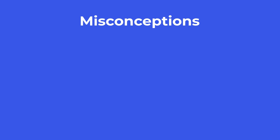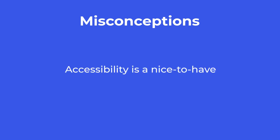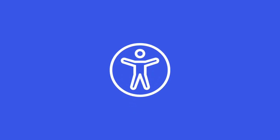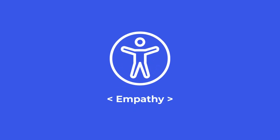Lastly, some would argue accessibility is a nice-to-have. On the contrary, it's as instrumental to a site as the client's branding, the team's coding standards, or your language's grammar rules. You won't deliberately introduce bugs, so why would you make things inaccessible? A better way to think about accessibility is as a codename for empathy. That makes it much harder to ignore and intuitive to adopt.